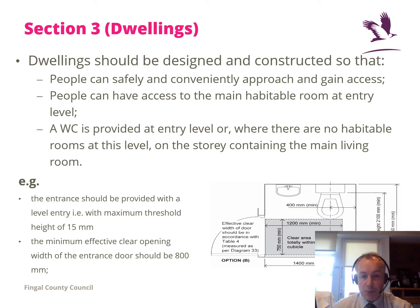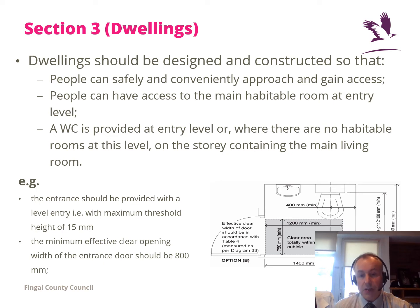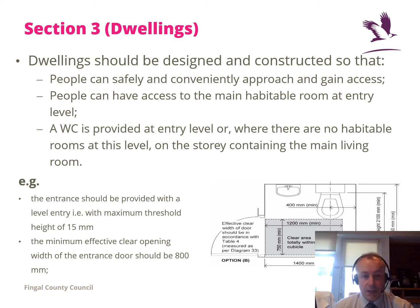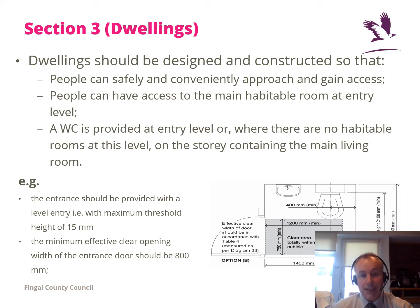There are Option A and Option B for the WC. We're looking for 1,200mm by 750mm clearance to allow a wheelchair to fit in the area, so the person can transfer from the wheelchair to use the facilities in the bathroom. The maximum threshold on the front door is 15mm, and the front door should be 800mm wide to allow people to get in and out of the building easily.